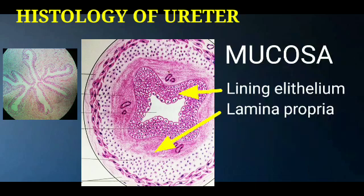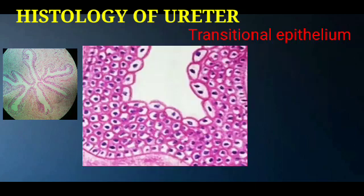The mucosa consists of lining epithelium and lamina propria. The lining epithelium of the ureter is the urothelium, or transitional epithelium. The characteristic features of the transitional epithelium have been covered in the chapter on epithelia.